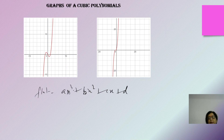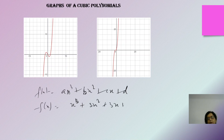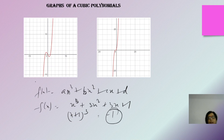The maximum zeros a cubic can have is 3, and it can have two same zeros, one zero, or all three the same. The best example of all three zeros being the same is x³ + 3x² + 3x + 1, which is the expansion of (x + 1)³. We get all three zeros equal to -1. This is what you need to understand in the representation of zeros in the case of polynomials.